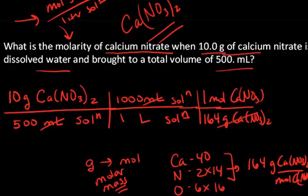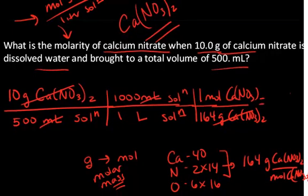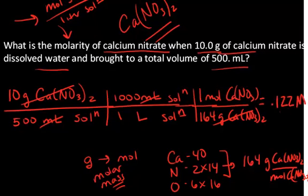The gram of calcium nitrate unit cancels, and I'm left in units of moles of calcium nitrate per liter of solution. I'll do the math, and I come out with a molar concentration of 0.122 molar concentration.